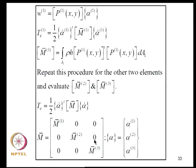For each sub-element, we evaluate the mass matrix in its local coordinate system using the kinetic energy expression. The bar indicates the mass matrix in local coordinates. This can be done exactly since the integrands are simple polynomials.